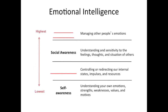Emotional intelligence is the ability to perceive and express emotion, assimilate emotion and thought, understand and reason with emotion, and regulate emotion in oneself and others. Whether it comes from nature or nurture isn't entirely clear — some is probably innate and hereditary, but the majority is likely learned. If it weren't a learnable skill, there wouldn't be numerous training opportunities for people to improve their emotional intelligence.